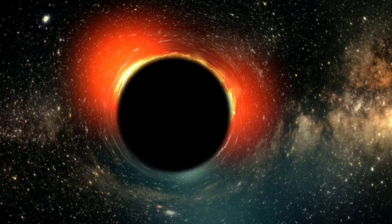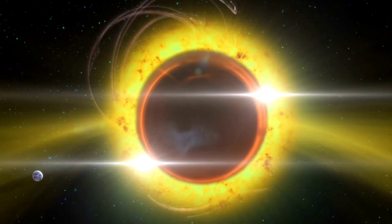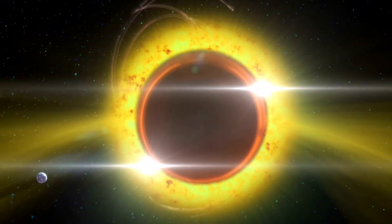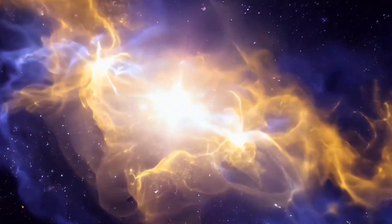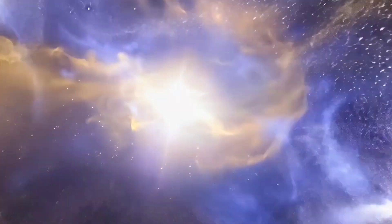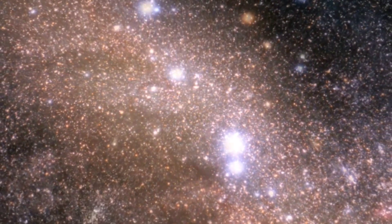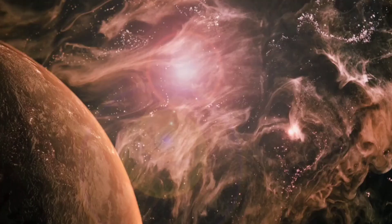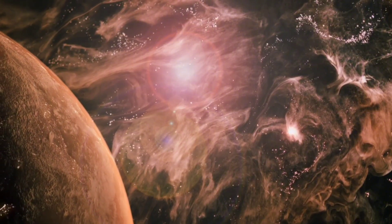While coronal mass ejections are a common occurrence in our own sun, the unique event observed in Betelgeuse adds an intriguing layer to our understanding of stellar life cycles and the dynamics of massive stars. The distance to Betelgeuse remains a topic of debate among astronomers. Some estimates suggest it is farther away, while others indicate it could be as close as 724 light-years from Earth.